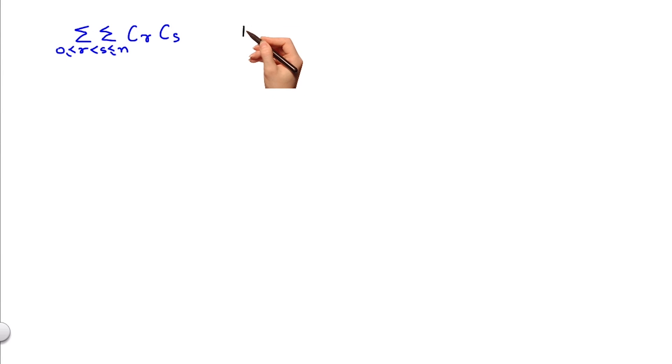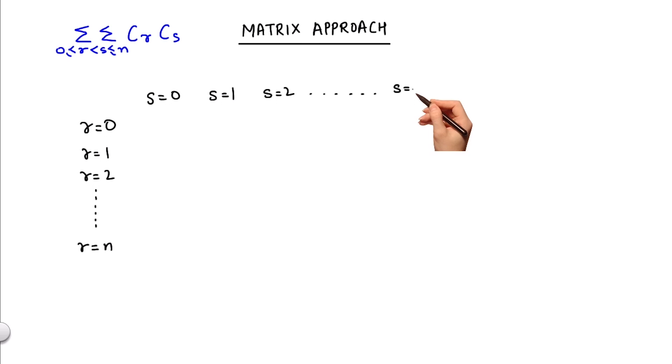We call the simpler way of solving this problem the matrix approach. Let us walk through the approach in a series of steps. First, we will create a matrix of R and S values.